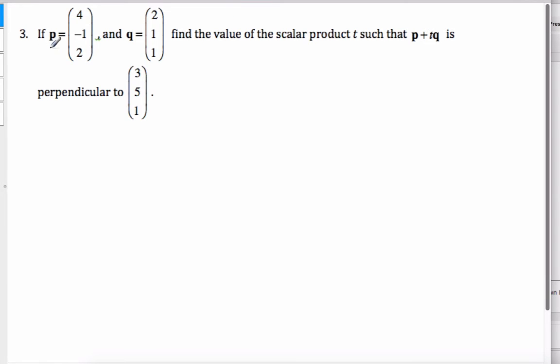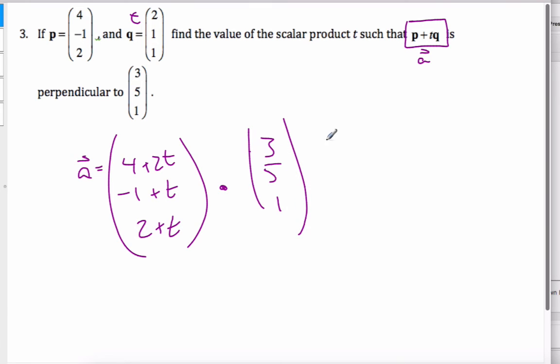I'll do another example here. We're giving these vectors here. Find the scalar product t such that P plus tQ is perpendicular to this scenario here. If I want to do that, I'm looking to find this brand new vector. I have to add them together when this is multiplied by t. So this new vector, which I'll call A, will be 4 plus 2t, negative 1 plus t, and 2 plus t. This is my new vector dotted with 3, 5, 1. And when I do that, to be perpendicular, this is the key theorem, it must be 0.